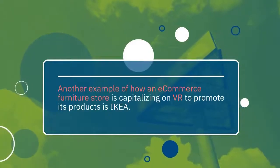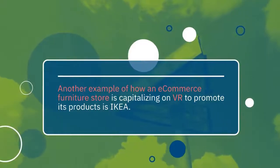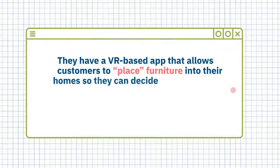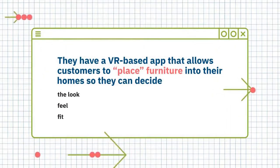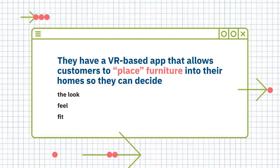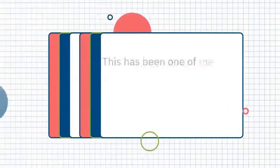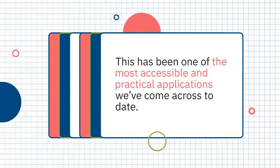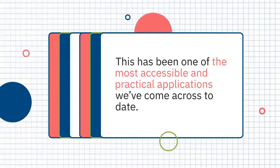Another example of how an e-commerce or furniture store is capitalizing on VR to promote their products is IKEA. They have a VR-based app that allows customers to place furniture into their homes so they can decide the look, feel, and fit. This has been one of the most accessible and practical applications we've come across to date.